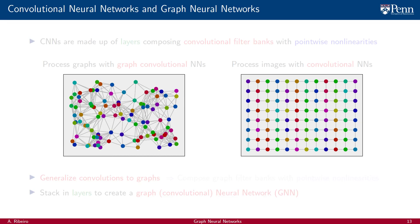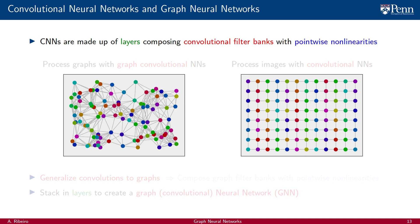That we know how to scale is good news. Alas, we can process images with convolutional neural networks, but we cannot process graphs or graph signals. But if we look deeper at CNNs, an intellectual roadmap arises. CNNs are made up of layers, each of which is a composition of a convolutional filter bank with a pointwise nonlinearity. In this definition, the notion of layer and the notion of pointwise nonlinearity is not specific to images — they can easily be generalized to arbitrary graphs.